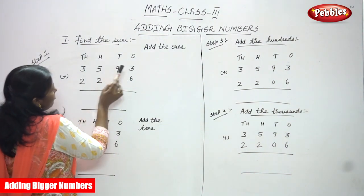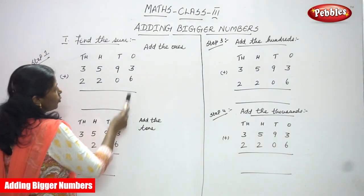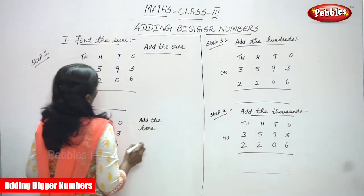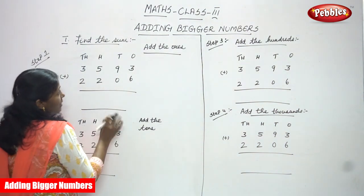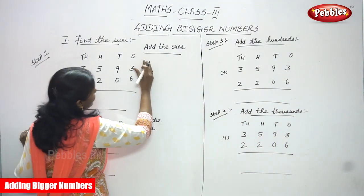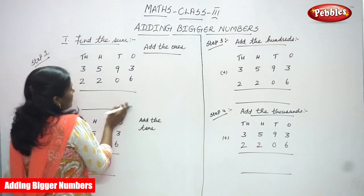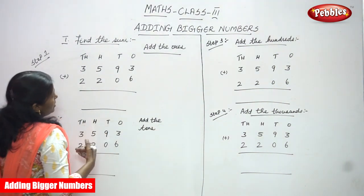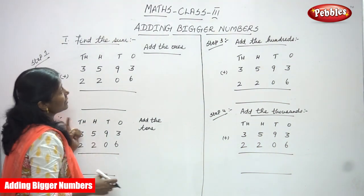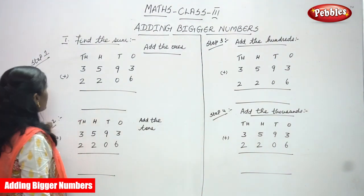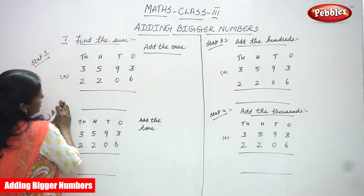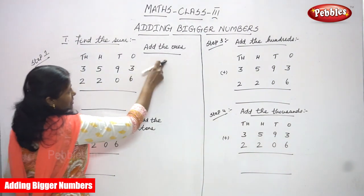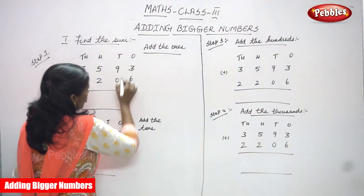Step one: first we have to write the numbers according to the place value - ones, tens, hundreds, thousands. Before entering step one, we arrange the numbers according to place value. Then we start step one. The first step is to add the ones. So I'm going to add only the ones place value.